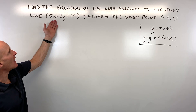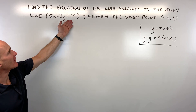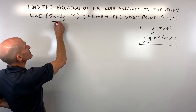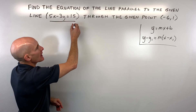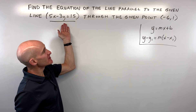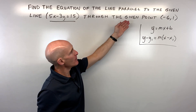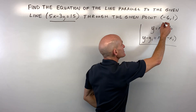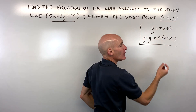We're given this line right here: 5x minus 3y is equal to 15, and we want to find the line that's parallel to this line, but it goes through this given point, negative 6 comma 1.